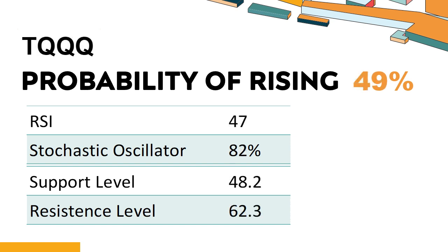How is TQQQ performing according to technical data? TQQQ's 14-Day RSI value was 47. When the RSI is above 25 and below 50, it generally indicates that the stock is moderately bearish. This means that the security's price has been falling but has not yet reached oversold levels, typically considered an RSI reading of 25 or lower. The current stochastic oscillator of TQQQ is 82%.